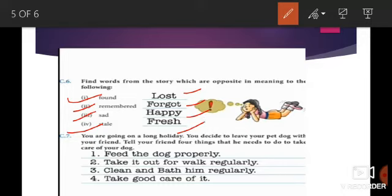Next, C7: You are going on a long holiday. You decide to leave your pet dog with your friend. Tell your friend four things that he needs to do to take care of your dog. So you are going somewhere out and you have your pet dog also, and you can't carry your pet dog with you, so you leave your pet dog with your friend. And you also give some instructions to your friend, how to take care of your dog. So what instructions will you give to your friend? First, feed the dog properly. Take it out for walk regularly. Clean and bath him regularly. Take good care of it. So these instructions you can give to request a friend to take care of your pet dog in this way.